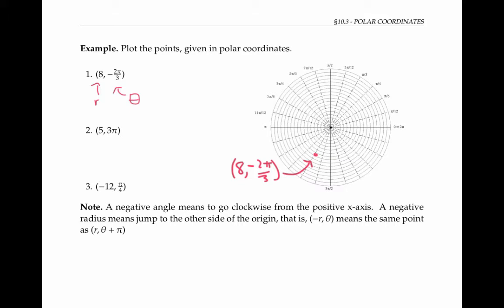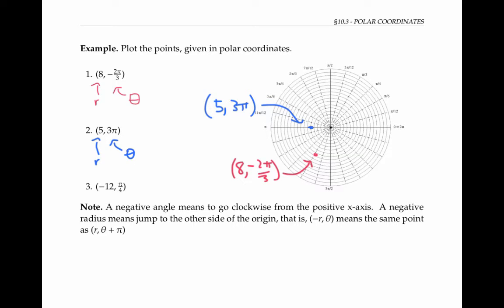The next point has a radius of five and an angle of three pi. The angle of positive three pi means that I go counterclockwise starting at the positive x axis. Here I've gone around by two pi, and then there's an extra pi to make three pi. Now the radius of five means I need to go five units out from the origin, so that puts me about right here. Notice that I could have also labeled this point with the polar coordinates of five pi. There's more than one way to assign polar coordinates to a point.